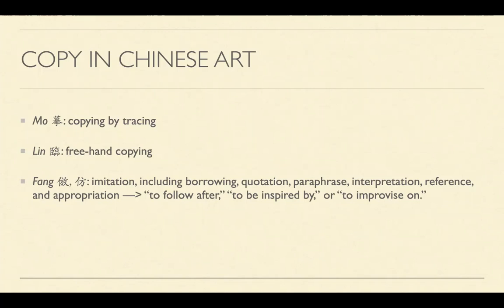Mo can be roughly translated as copying by tracing. Lin means freehand copying, and fang refers to imitation. Artists began their studies by selecting the proper aesthetic models for assimilating the styles, typically progressing from copying by tracing to freehand copying to imitation. But the goal of the various imitative practices was aimed to develop one's own personal style and identity.